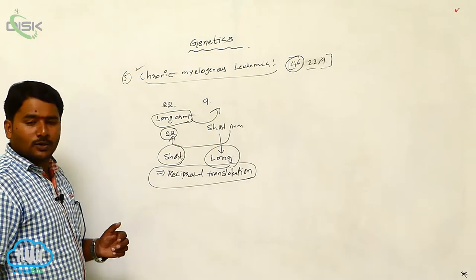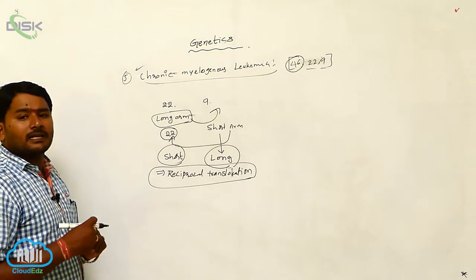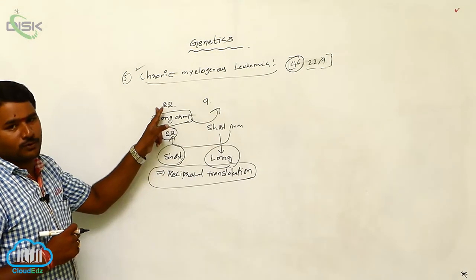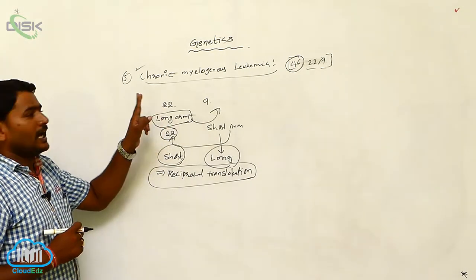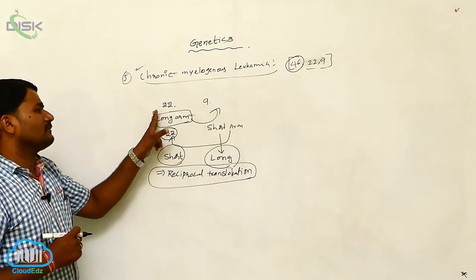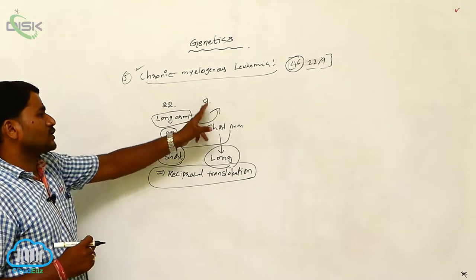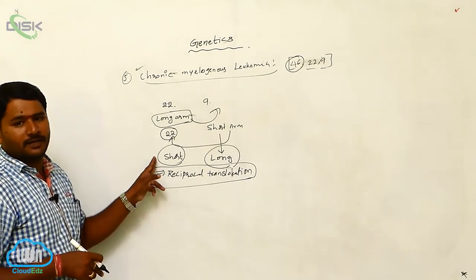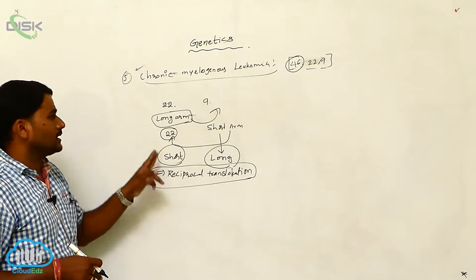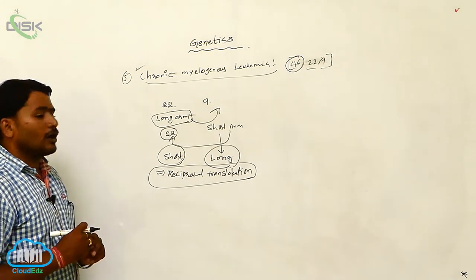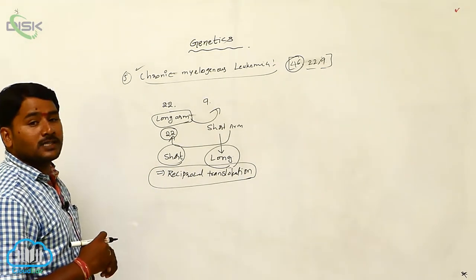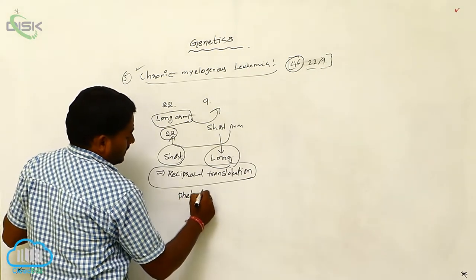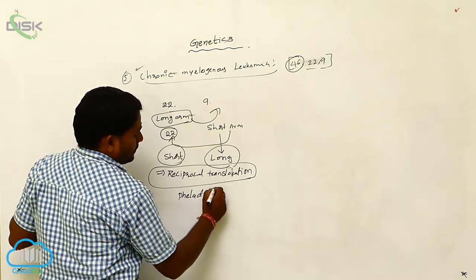In the reciprocal translocation, what is happening? A part of chromosome 9 is attached to the 22nd chromosome, and the long arm of the 22nd becomes attached to the 9th chromosome. So the 22nd will become short and the 9th will become long. These chromosomes are called Philadelphia chromosomes.